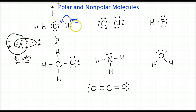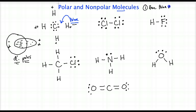So what creates unequal distribution of electrons are polar bonds — there's a tie-in here. To be a polar molecule, you first have to have at least one polar bond. Polar bonds create that unequal distribution.